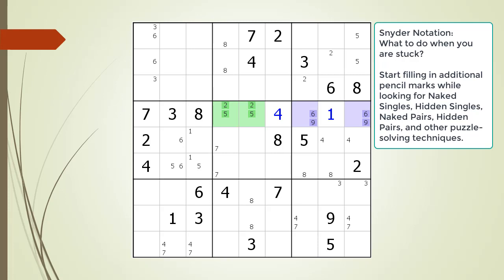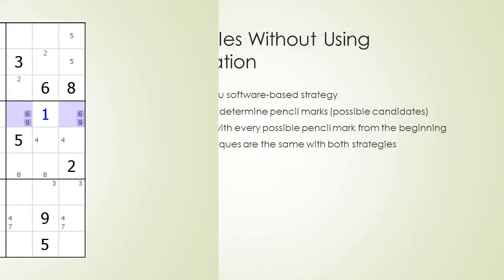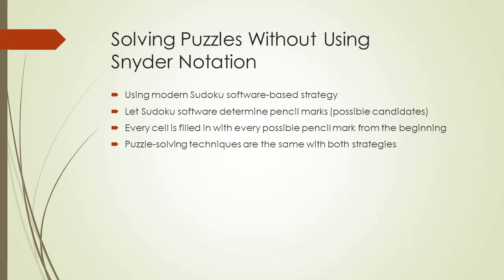Next, we are going to do a much shorter demonstration of solving this same puzzle without using Snyder notation. We are going to use a completely different puzzle solving strategy that takes advantage of features found in modern Sudoku software. We let our Sudoku software fill in all the pencil marks or possible candidates for us automatically. Both strategies use the same puzzle solving techniques.